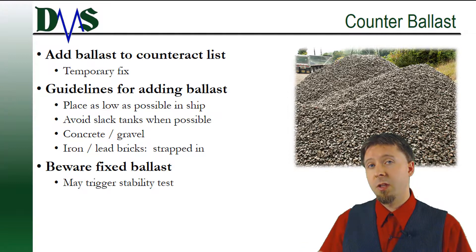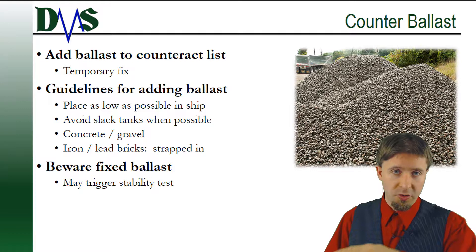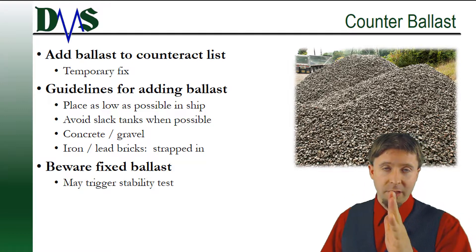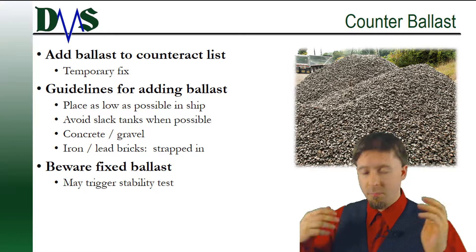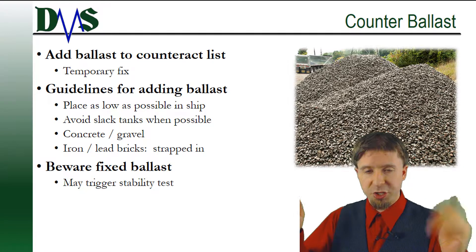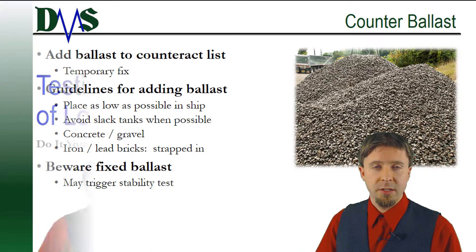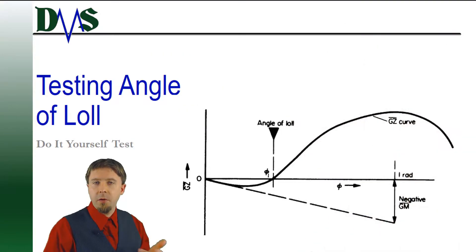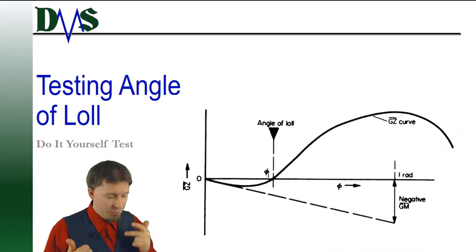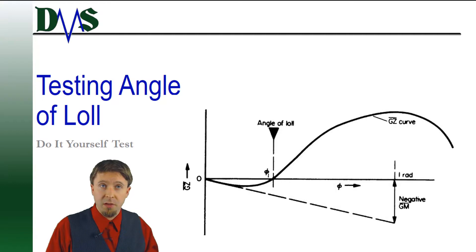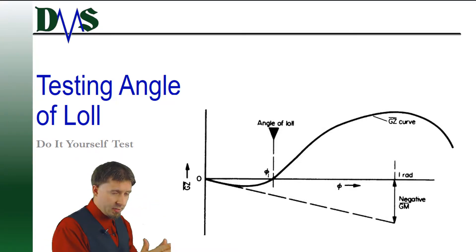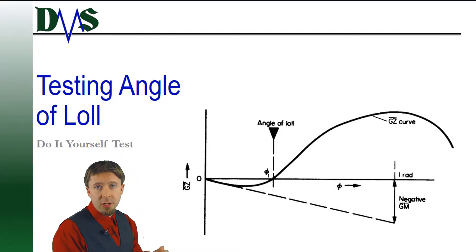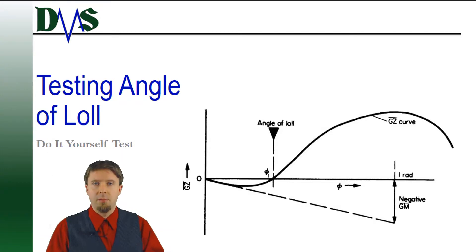If putting in temporary ballast actually brings your vessel back to level heel and nothing changes after that — congratulations, you have a vessel list. Testing for an angle of loll: the do-it-yourself test. So you suspect that you don't have a ship list, but that you actually have an angle of loll.